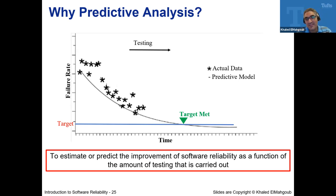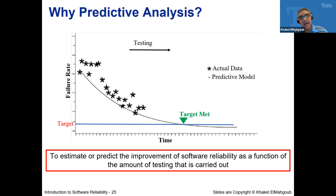As you may recall, we met last Tuesday. My name is Kaladil Magoop. I work at Philips as the head of software quality, and at the same time I'm adjunct faculty at Tufts. Last time we talked about software reliability and the software reliability engineering process.